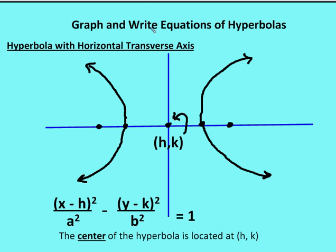When the transverse axis is horizontal, the equation is (x − h)²/a² − (y − k)²/b² = 1, where the center is at (h, k). The key difference between the hyperbola and the ellipse equation is the sign — for a hyperbola it's negative, subtracting the y² term from the x² term. Everything else in the format remains the same; we just change the plus sign in the ellipse to a minus sign.